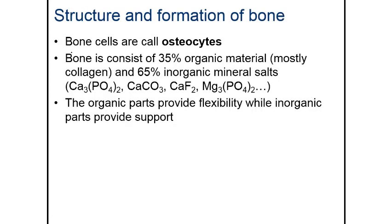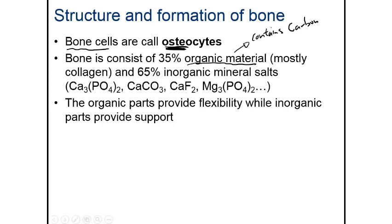Bones contain bone cells called osteocytes. The prefix 'osteo' has to do with bones. Bone is 35% organic — meaning it contains carbon — primarily made up of collagen fibers. The other 65% is inorganic mineral salts, which come in two forms: those containing calcium and those containing phosphate. There are several combinations such as calcium phosphate, calcium carbonate, calcium fluoride, and so on. Anything with calcium or phosphate is found in the inorganic part of the bone.